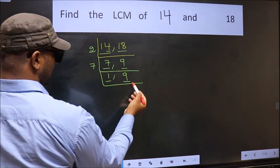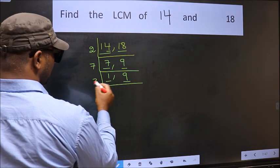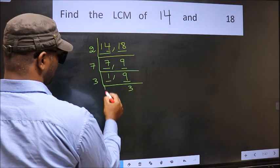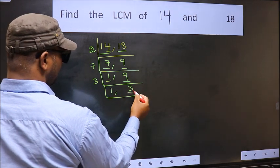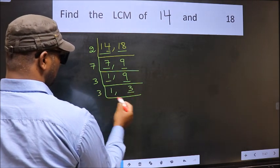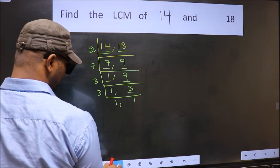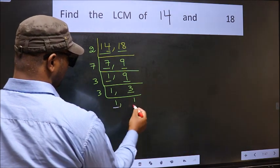So focus on the other number 9. 9 is 3 times 3. Now we have 3. 3 is a prime number. So 3 times 1 is 3. So we got 1 in both the places.